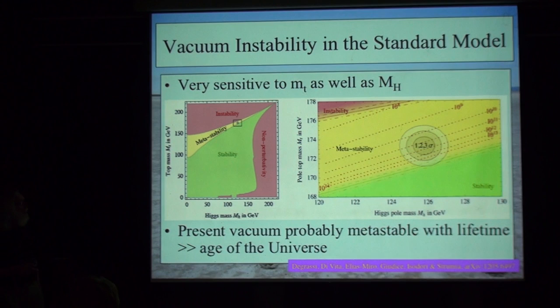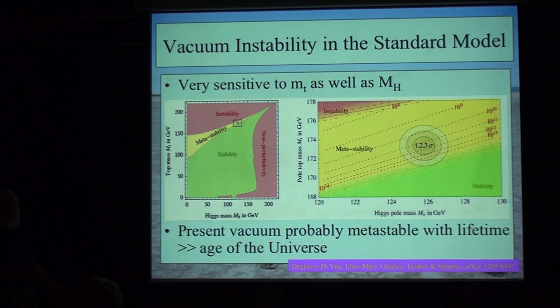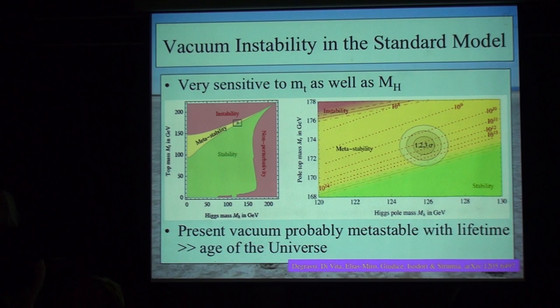In a bit more detail: the horizontal axis is the mass of the Higgs, the vertical axis is the mass of the top quark — which is generating this instability. Here is a zoom on the experimentally preferred range. Over here is the region of stability — if the top quark mass had been less or the Higgs boson heavier, our vacuum would be stable, nothing to worry about in the future of the universe except global warming. But with this value of the Higgs mass and this value of the top mass, we are probably in the region where the theory is unstable, and we need new physics to stabilize it.